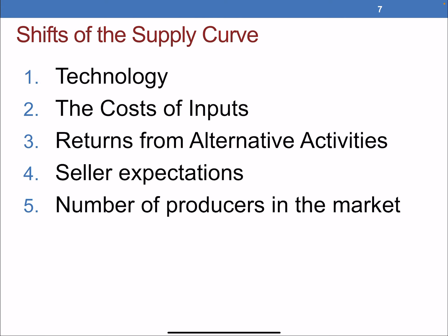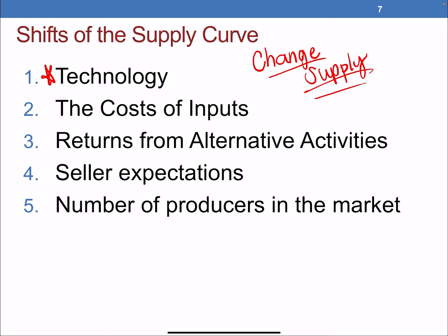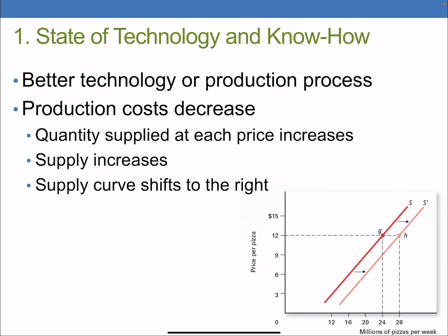Just like with demand, there are things that will shift the supply curve — things that will change supply. Those factors include: the state of technology, the cost of inputs, returns from alternative activities, sellers' expectations of the future, and the number of firms in the market.